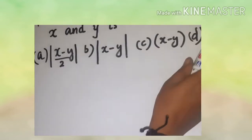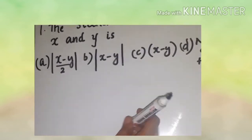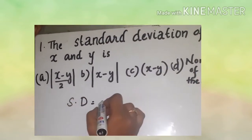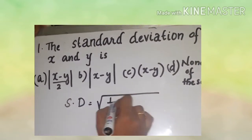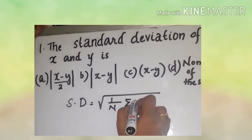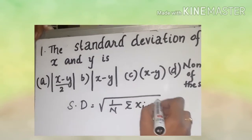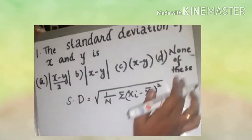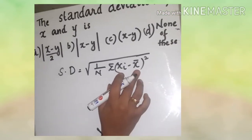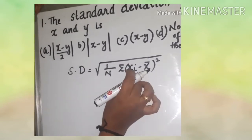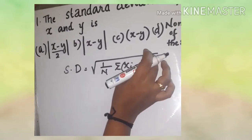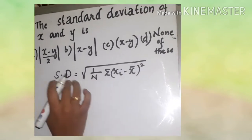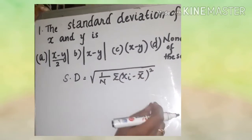The option is to get the standard deviation. I'm going to check out the standard deviation and the options. The formula is the square root of 1 by n, sigma x-i minus x-bar, the whole square. That is the standard deviation for one observation, which we have to do with arithmetic mean. We have to square, sum the numbers, divide, and take the square root.